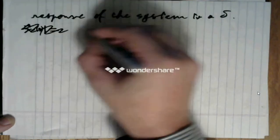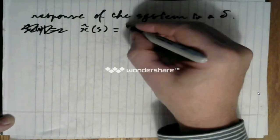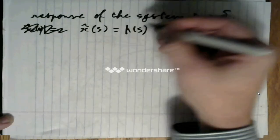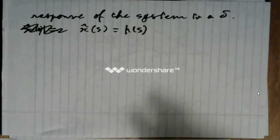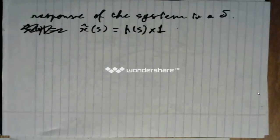x hat of s is equal to h of s, the transfer function itself, times one, which is the Laplace transform of the Dirac.